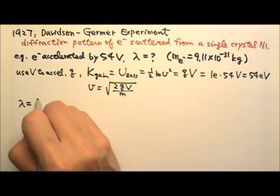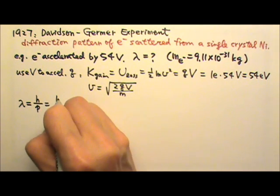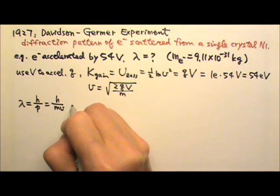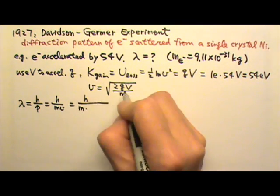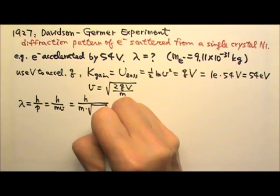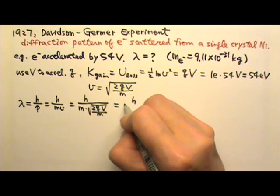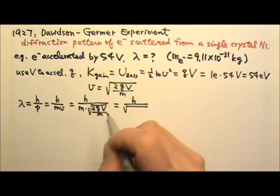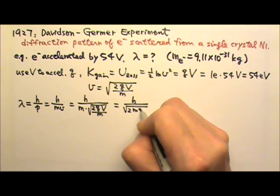So the wavelength of this electron will be h over momentum, which is h over mV. And this will be h divided by m times square root of 2eV over m. So this will be h divided by square root, and if I simplify this part, I get 2meV.